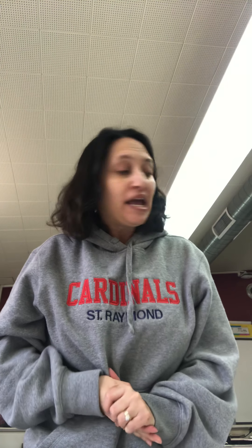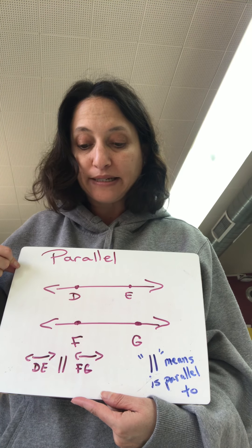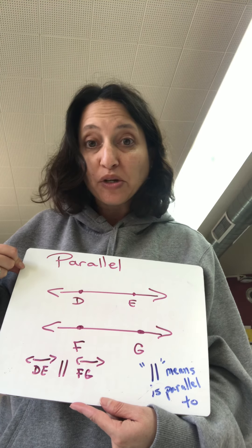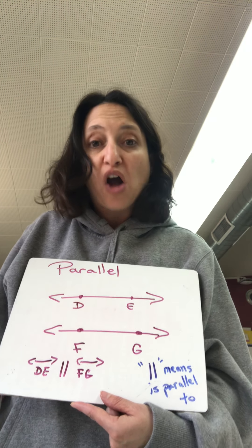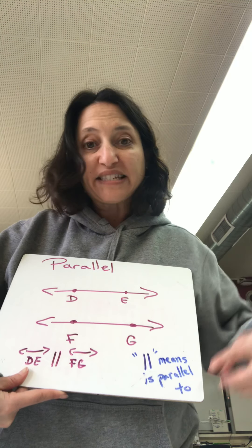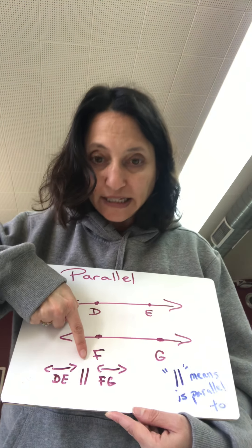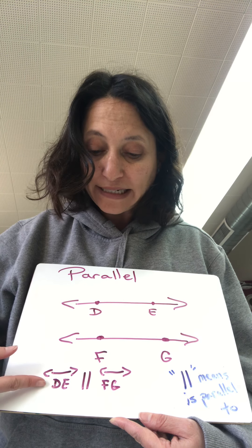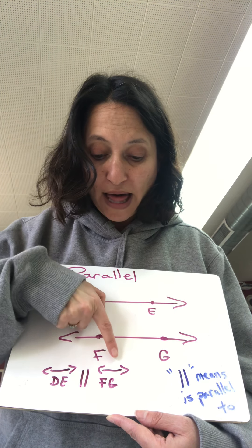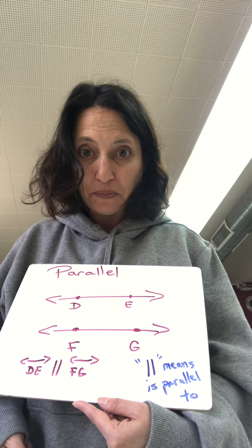The next one we're going to talk about is parallel lines. Parallel lines are lines on a plane that are always the same distance apart. They will never intersect. If these lines kept going on forever, they would never cross. They're always the same distance apart — they're called parallel lines. Do you see this little symbol here? That means "is parallel to." So I would say line DE is parallel to line FG.